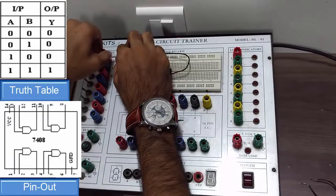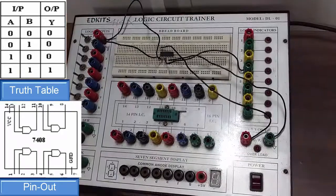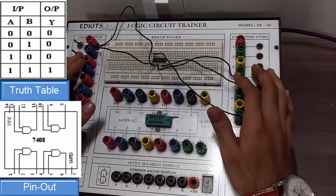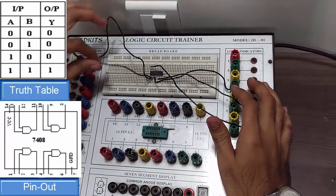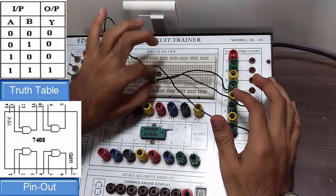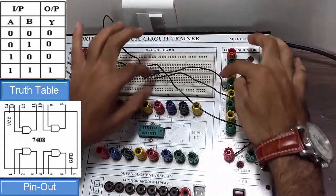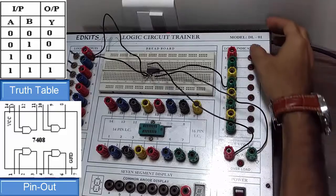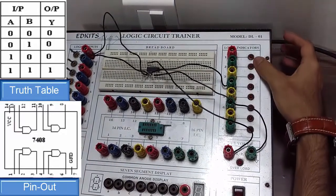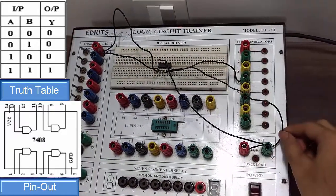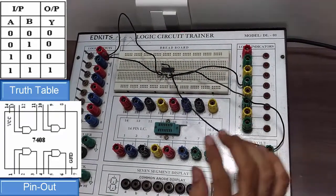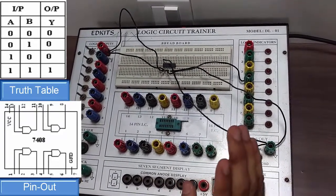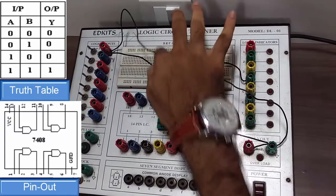Now we are done with the connections. Input one to pin one, input two to pin two, output is taken from pin three which is connected to the fourth indicator. We can use any of the eight indicators given on the right side. Pin 7 is for ground and pin 14 is for VCC. Since 7408 is a quad AND gate IC, we are using the first AND gate.